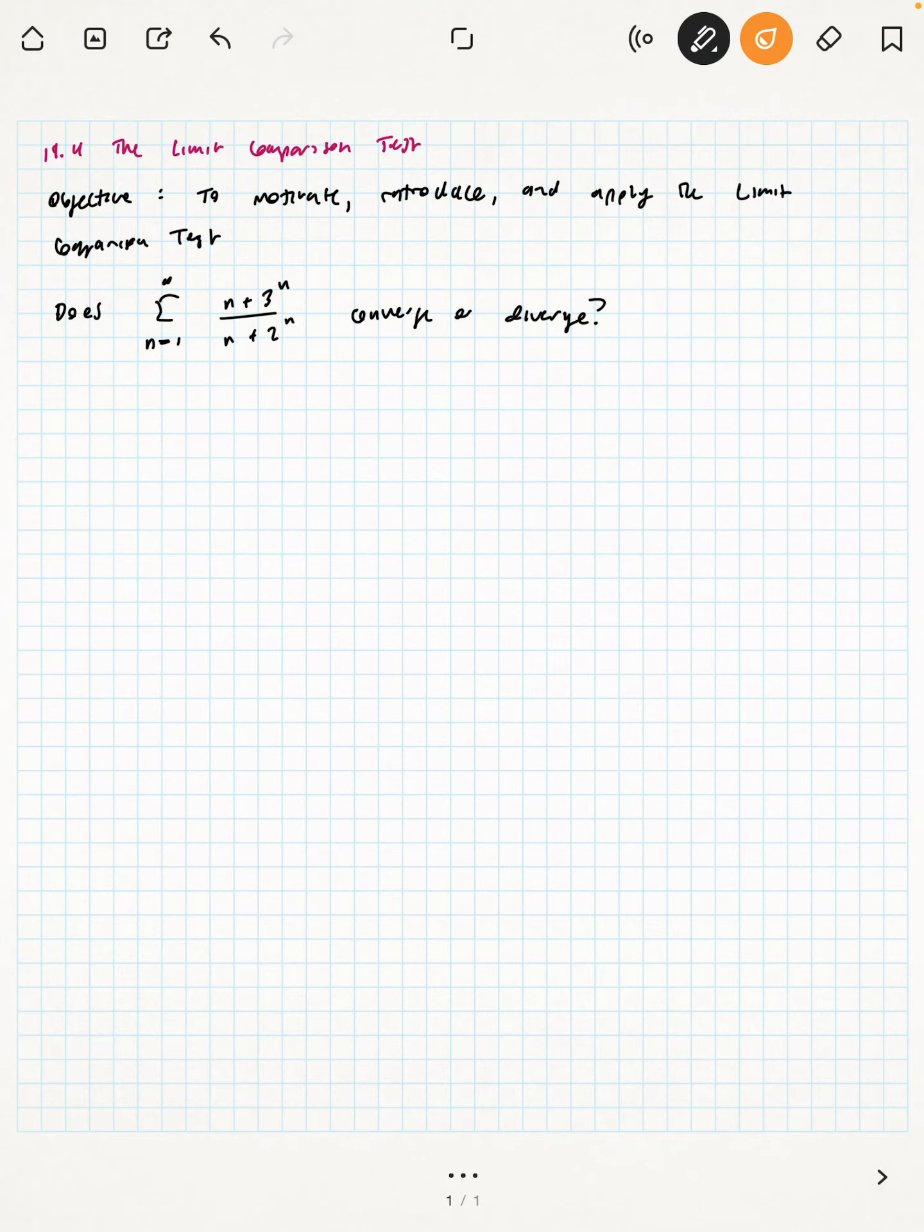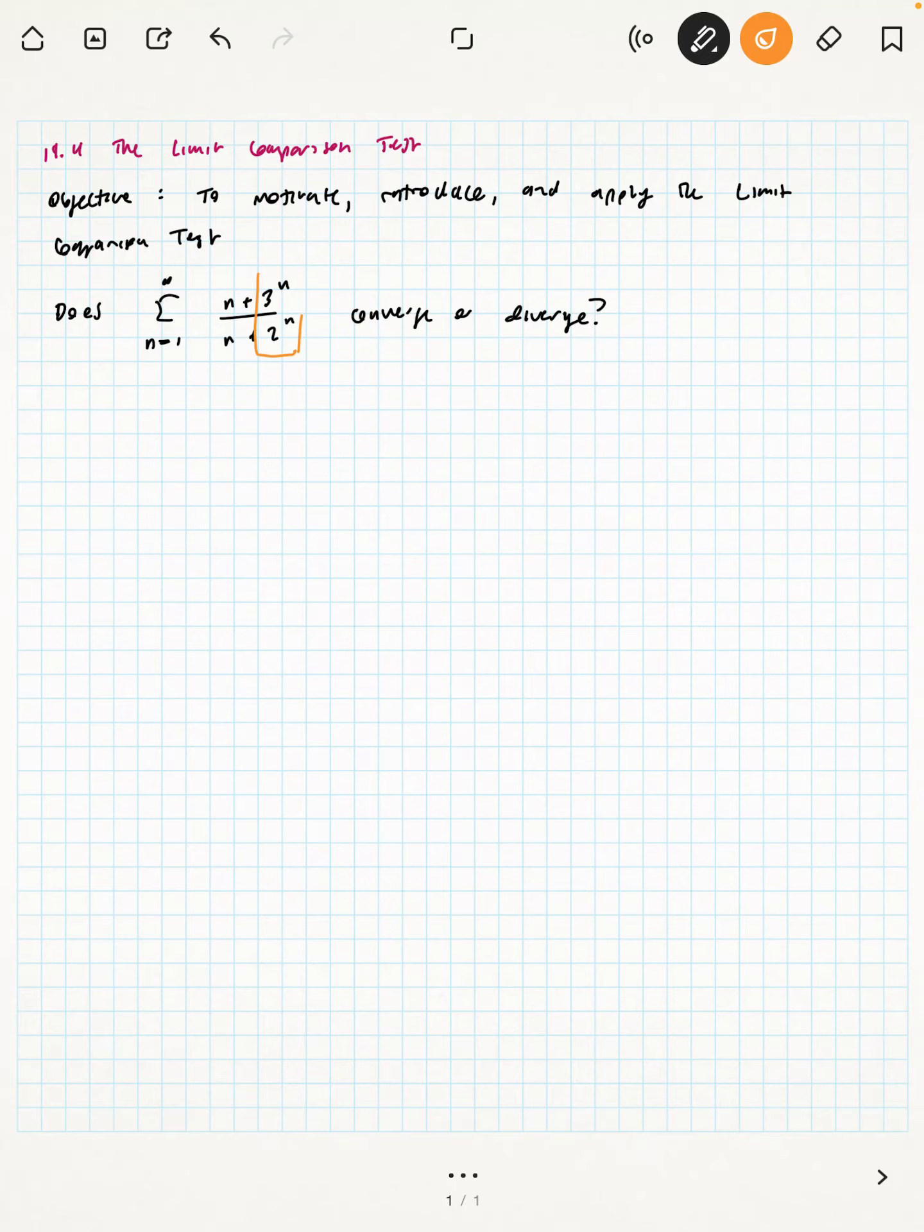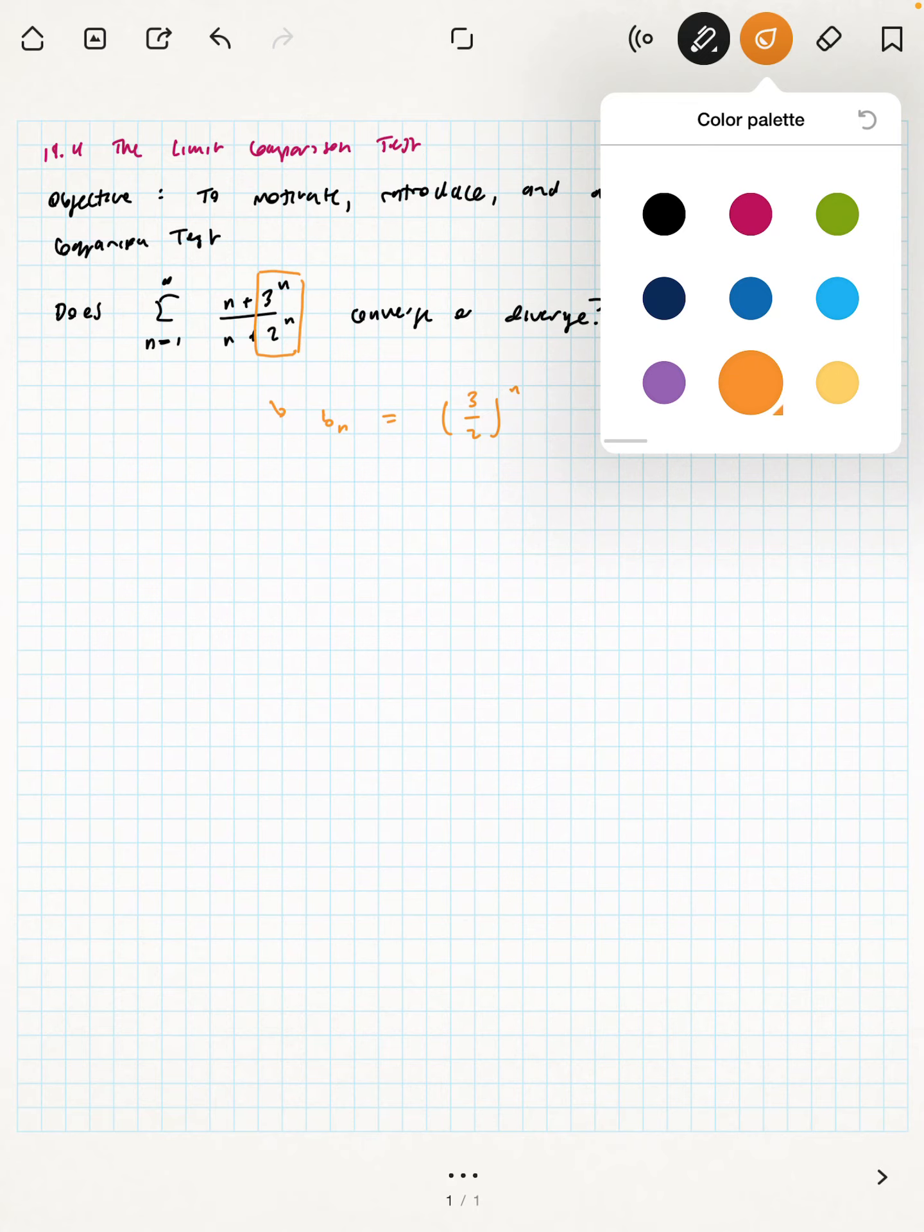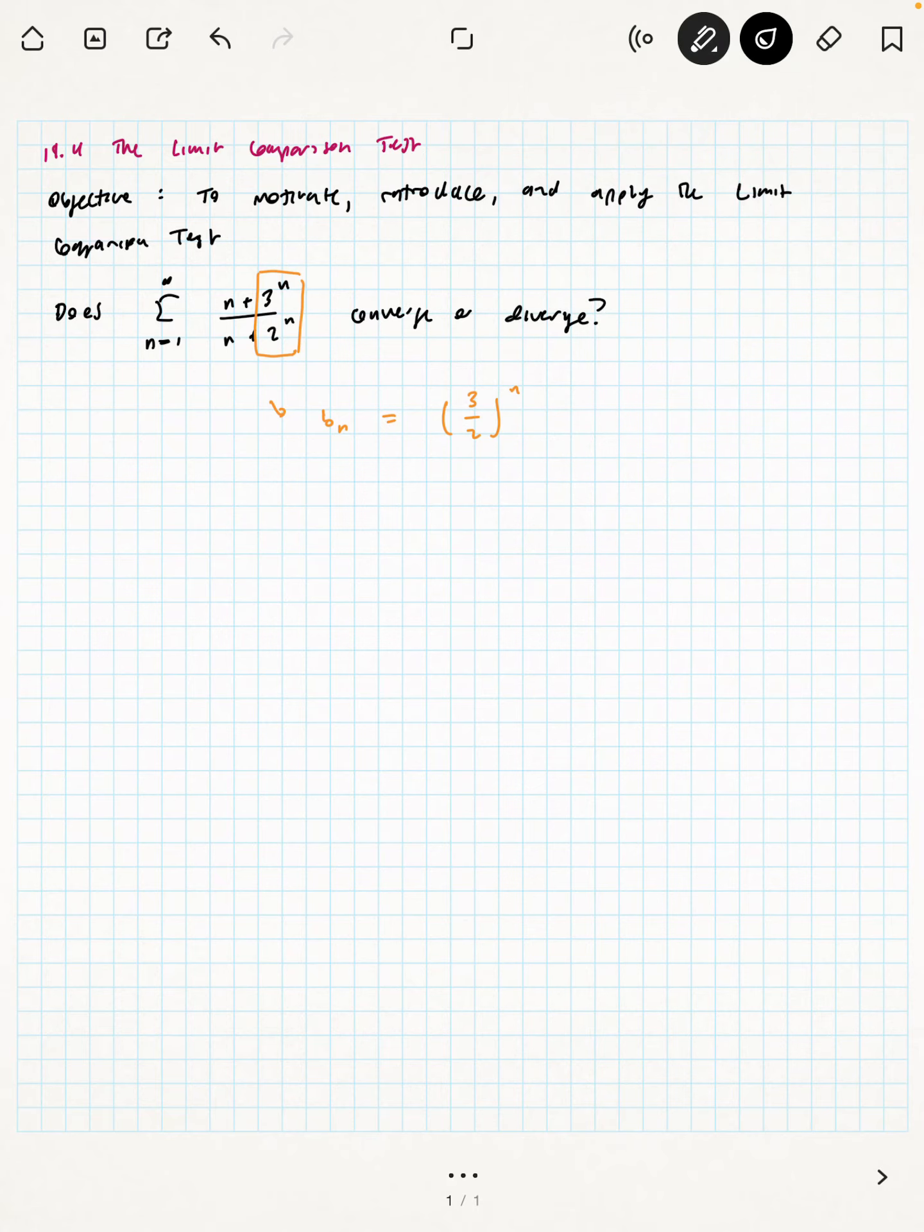Our instinct might tell us that it should diverge because the dominant part is this part right here. So the 3 to the n over 2 to the n, similar to the previous video where we explored that series that had the 6 to the n over 5 to the n. This b to the n, or sorry, b sub n equals 3 over 2 to the n gives us a geometric series that does diverge. And the presence of this n plus and the 2 n's in the numerator, that seems like it shouldn't give us too much.